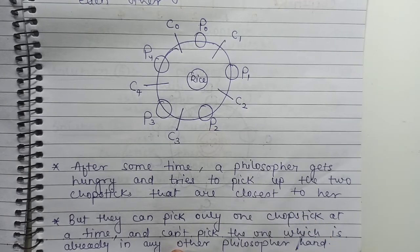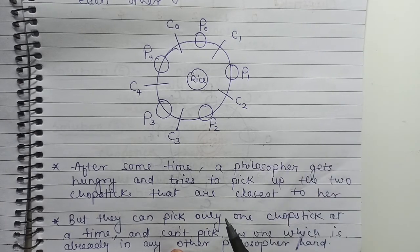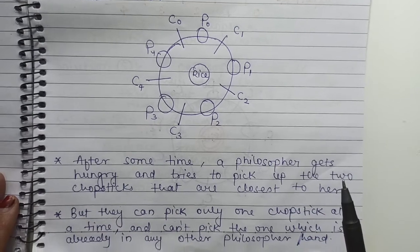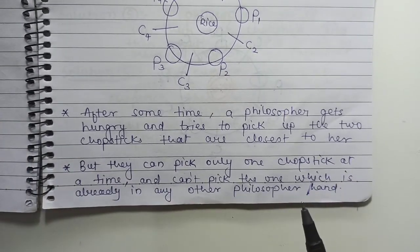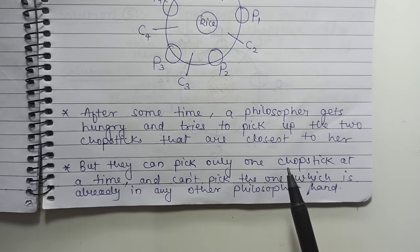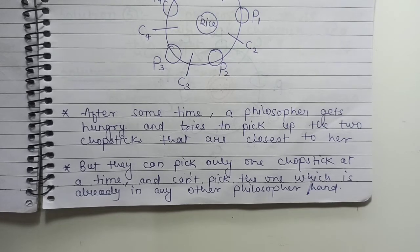This is the diagram. See, this is the circular table. There are five chairs, each belonging to each philosopher. I represented philosopher with P. Then there are five chopsticks laid between philosophers. When the philosopher thinks, they do not interact with each other. But after some time, from time to time, a philosopher gets hungry and tries to pick the two chopsticks that are closest to her.